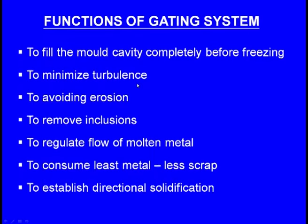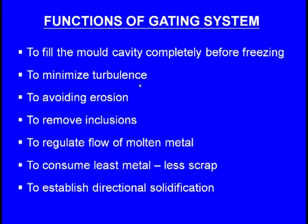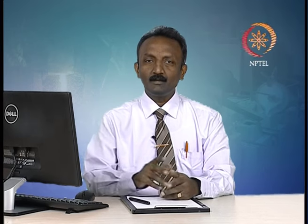The second function is to minimize turbulence. While the molten metal is entering into the mould cavity, it may cause turbulence, which can erode the sand particles and result in casting defects. There should not be any turbulence, or turbulence should be minimized — that is the second function of the gating system.